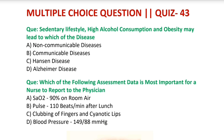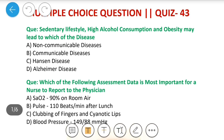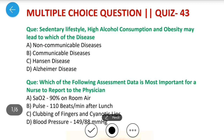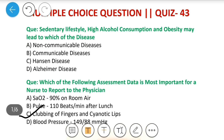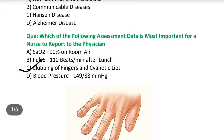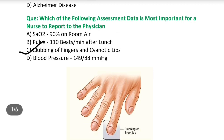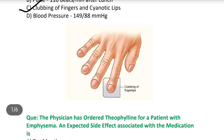Next question: Which of the following assessment data is most important for a nurse to report to the physician? Options: A) 90% on room air, B) pulse 110 beats per minute after lunch, C) clubbing of finger and cyanotic lips, D) blood pressure 149/88 mmHg. Answer is C — clubbing of finger and cyanotic lips. Clubbing of finger is most commonly caused by lung cancer and is mostly affected by heart or lung disease, where blood supply to extremities is reduced, oxygen demand is not met, and extremities become drum-shaped.